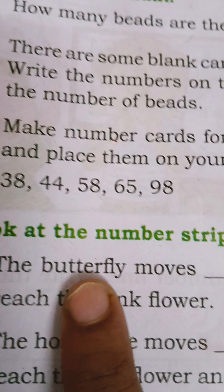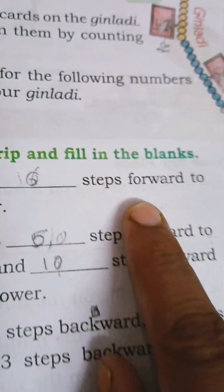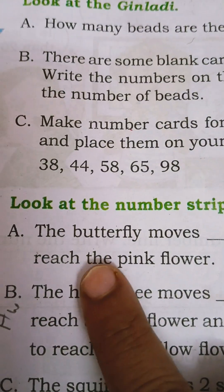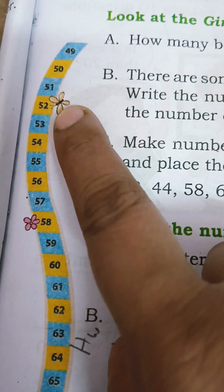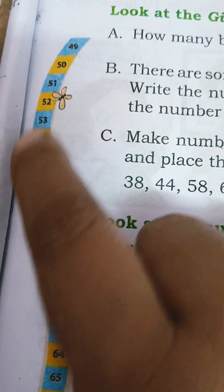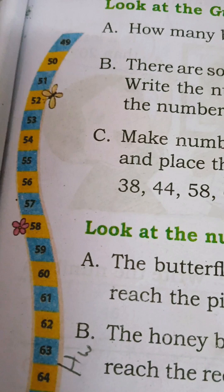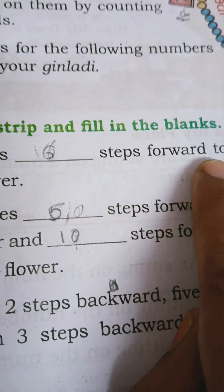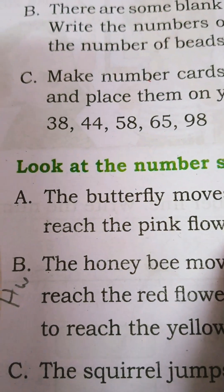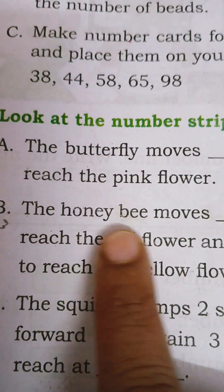The butterfly moves dash steps forward to reach the pink flower. This is butterfly. You have to count: 1, 2, 3, 4, 5, 6. 6 steps forward to reach the pink flower.